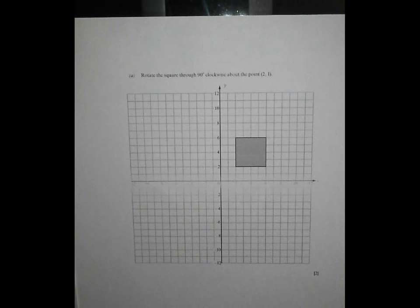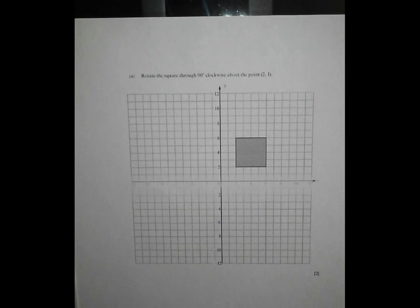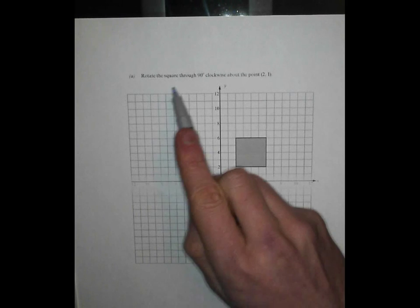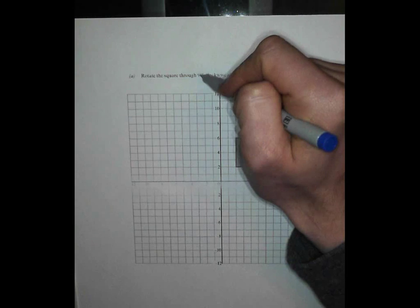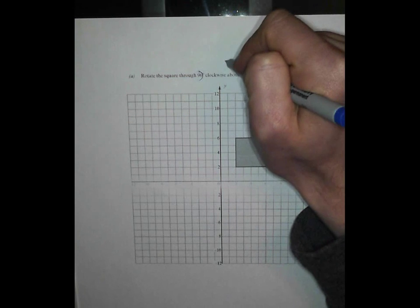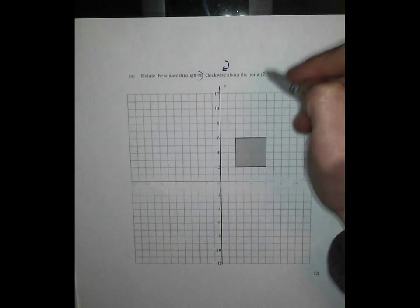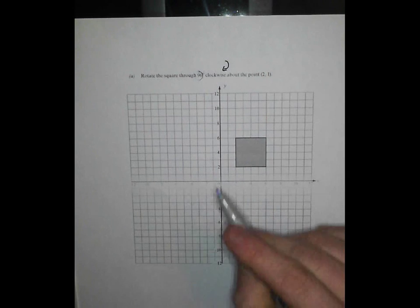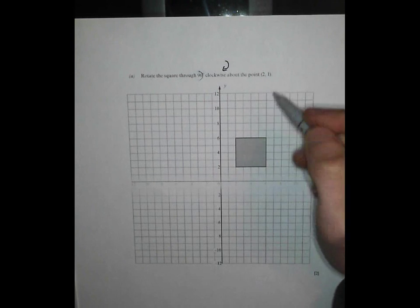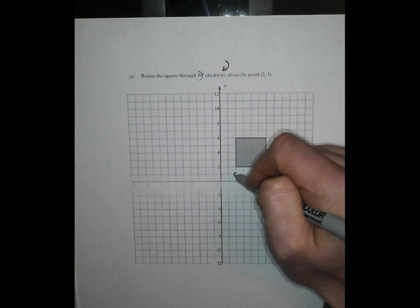We've just got a part A and a part B to do. Part A is fairly nice. Part B is pretty nasty, but let's not underestimate part A. We've got two marks that we need to get. Rotate the square through 90 degrees clockwise about the point 2, 1. Let's get that point 2, 1 in there first. That's 2 on the X and 1 on the Y. I think it goes there.